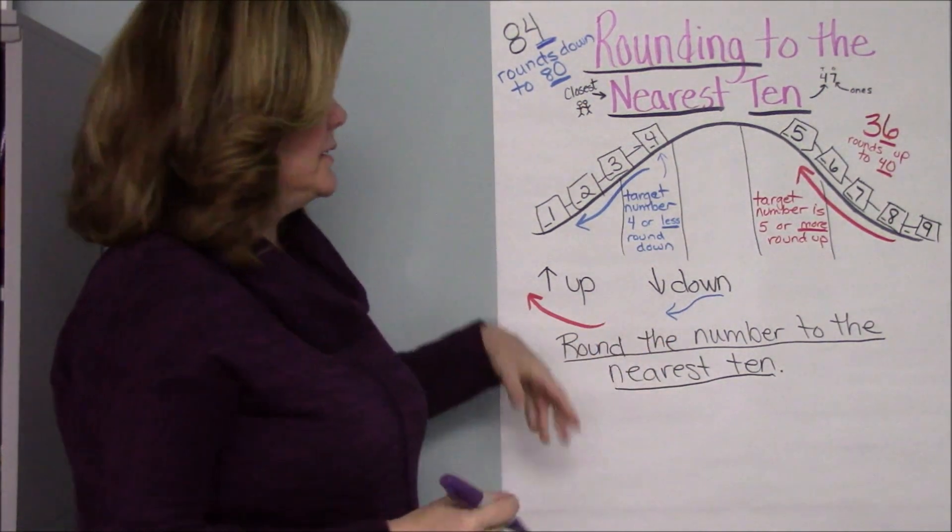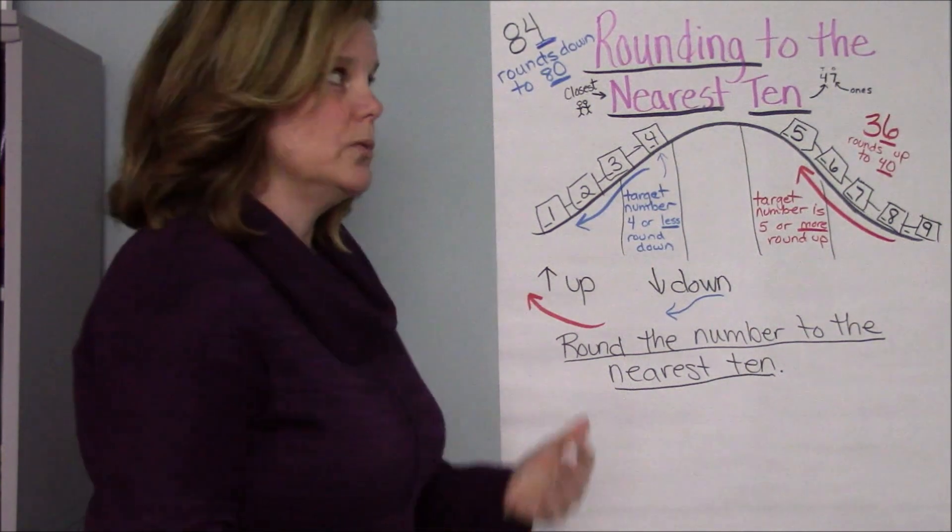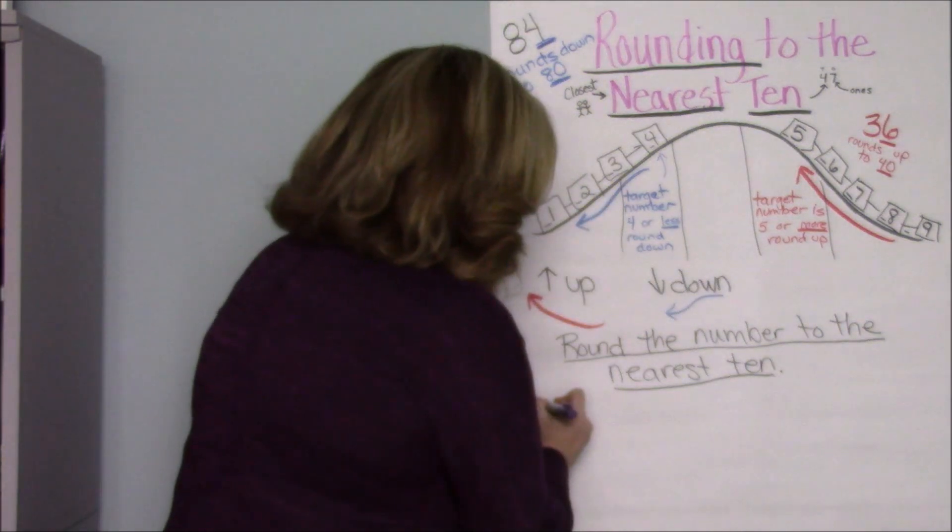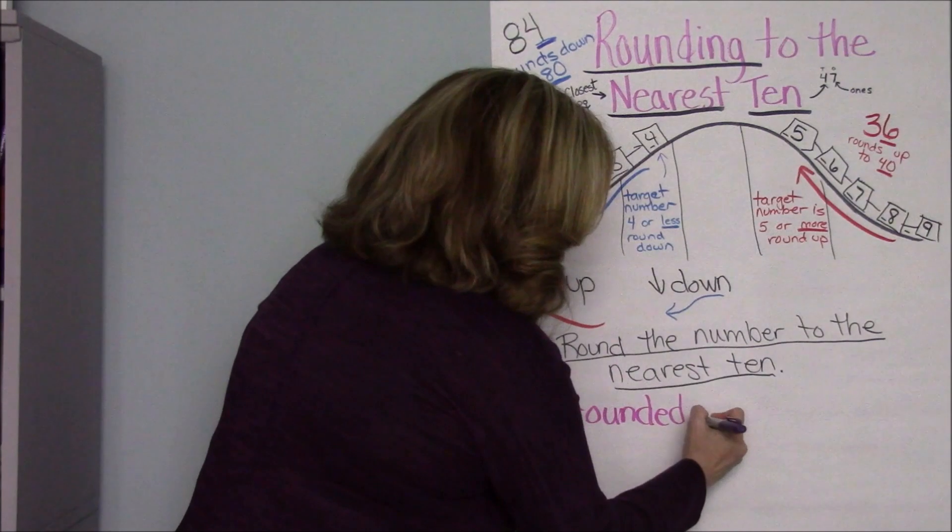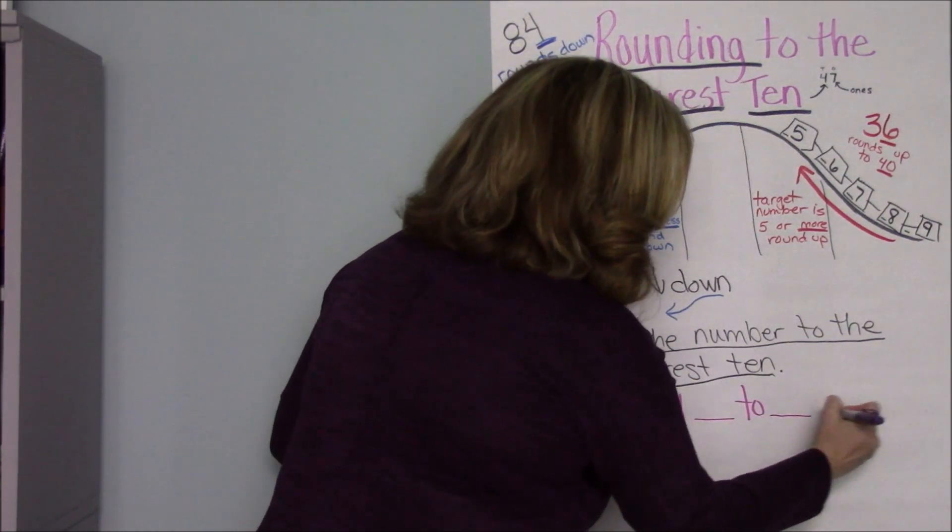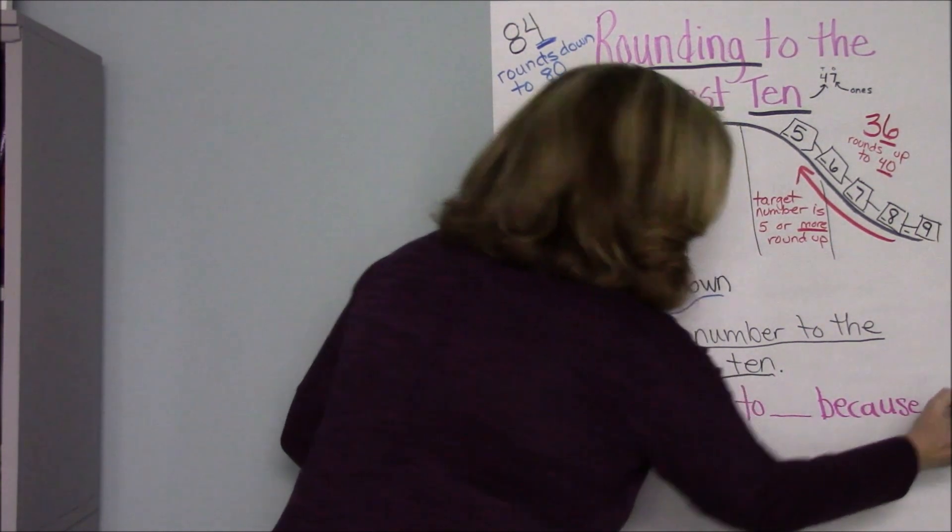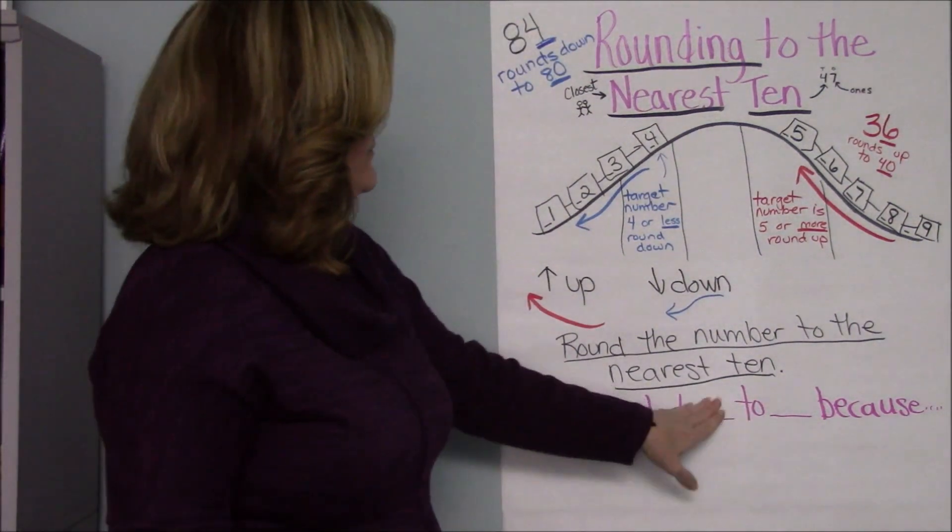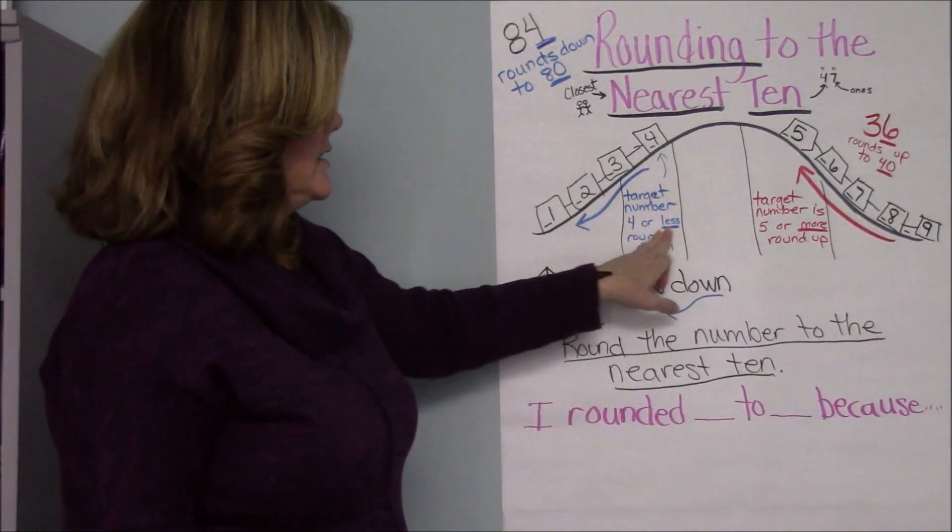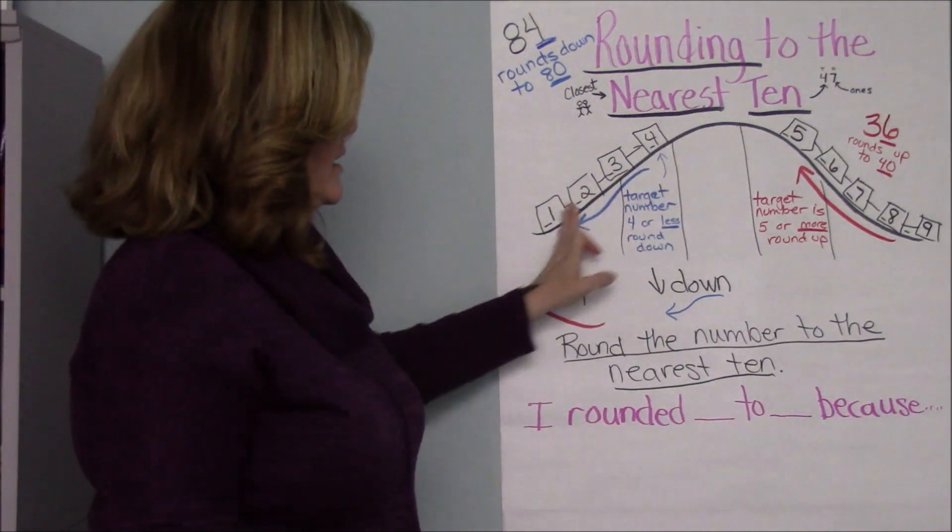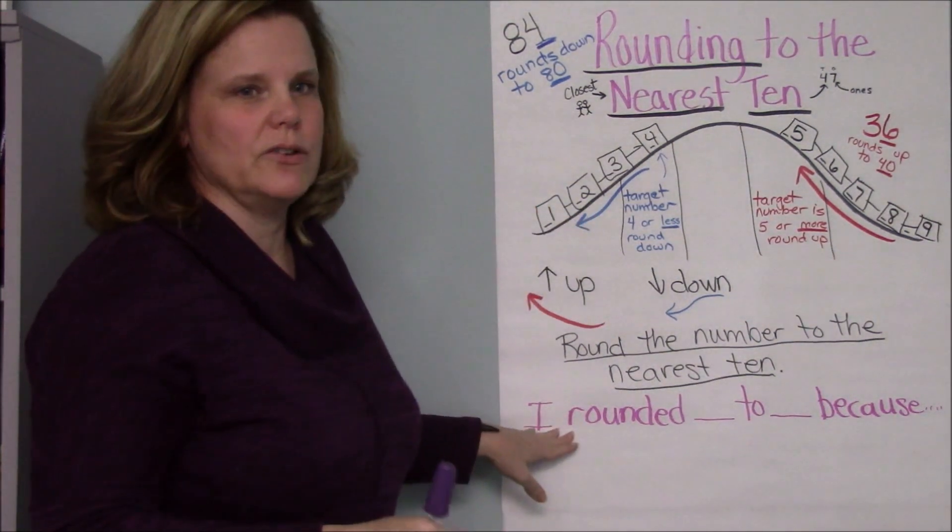So when you are responding, say I gave you the number 84. When you are giving your answer, when you are telling someone else what you came up with, you're going to say, I rounded blank to blank because. That might be one way you say it. I rounded 84 to 80 because 4 is less than 5, and so it has to go down. Some kind of explanation there.